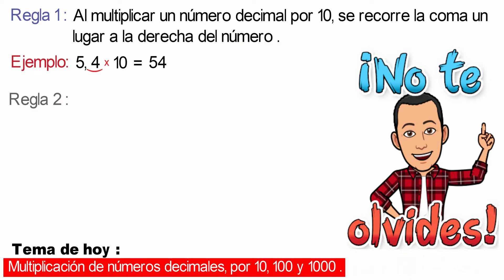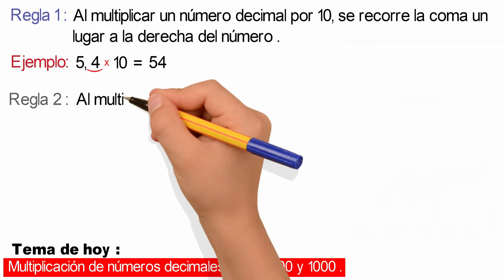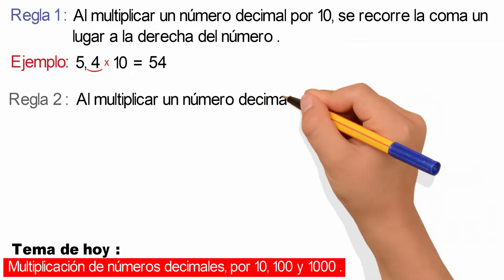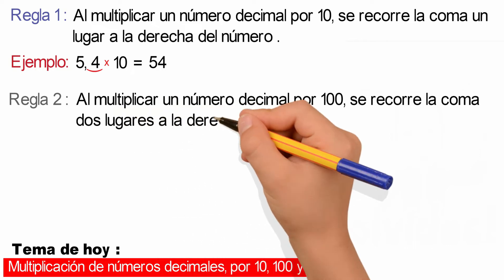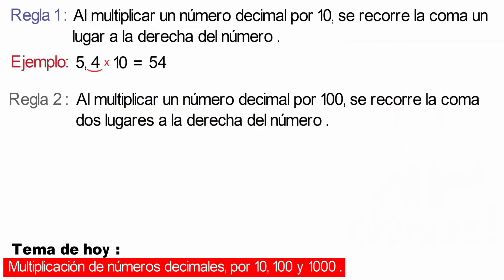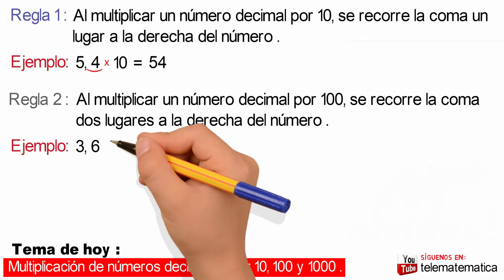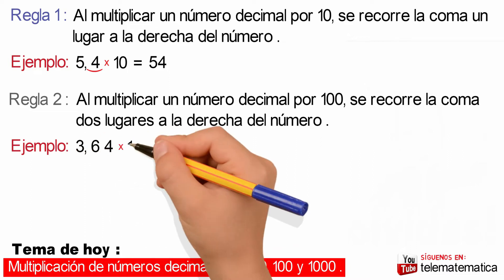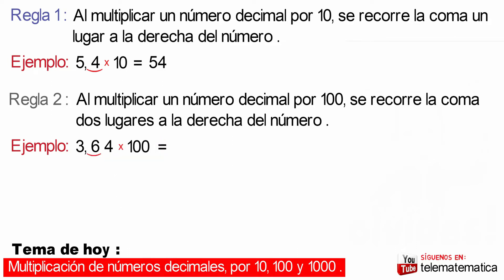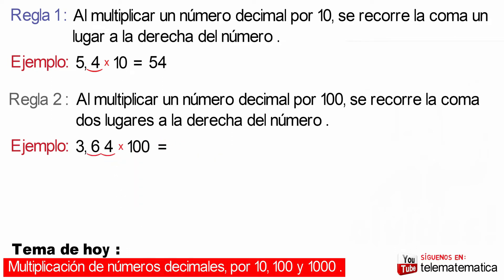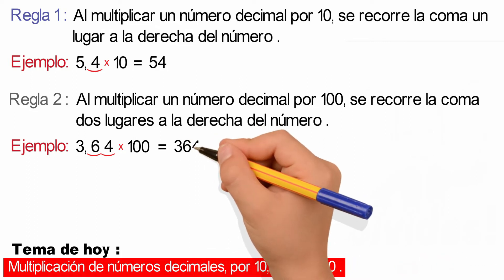Rule number two: when multiplying a decimal number by 100, the comma goes two places to the right of the number. Let's see an example: 3.64 multiplied by 100. Applying the rule, we run two places to the right and we get as a result the number 364.